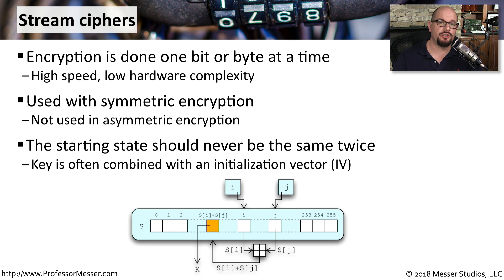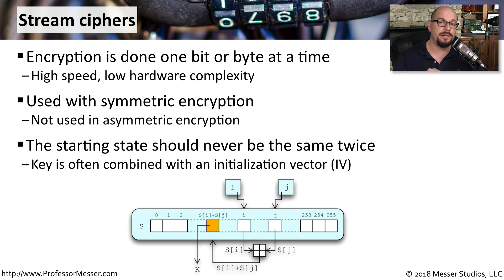Because we're sending such small pieces of information with a stream cipher, it would not be uncommon to send duplicates of information consecutively. In order to make this similar information appear very different once encrypted, we would usually combine it with an initialization vector. And this makes all of the traffic that's being streamed look very different from one another.